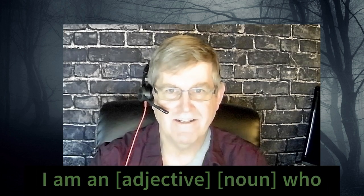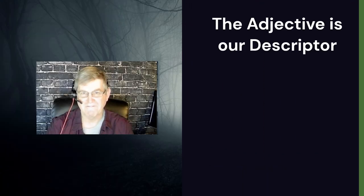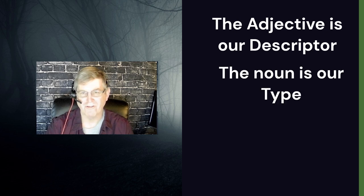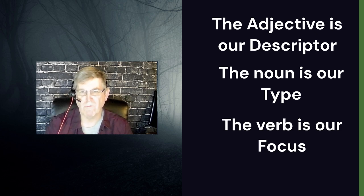In the Cypher System, they have basically a sentence that describes your character. Think of it like Mad Libs — you put in a noun, a verb, or an adjective, and string them together. The sentence is: I am an adjective noun who verbs. The adjective is what we call our descriptor — it defines a little about what we're going to be. The noun is our type, similar to a character class. And the verb is our focus — it's what we do, what we specialize in.